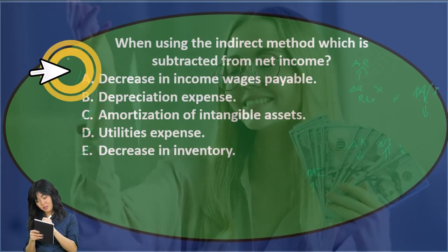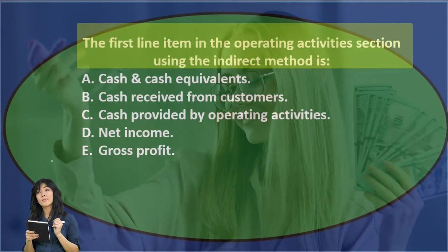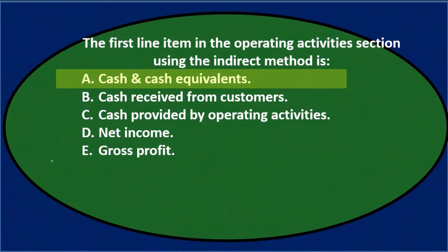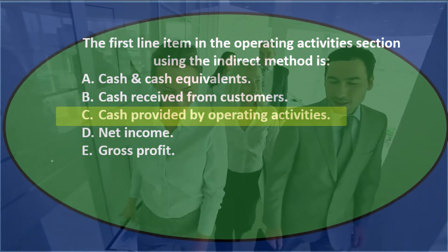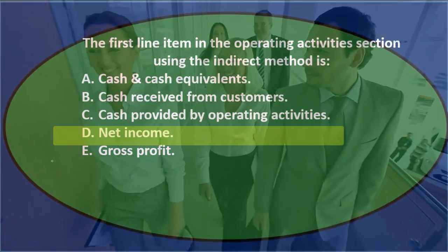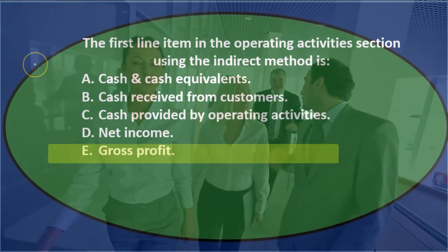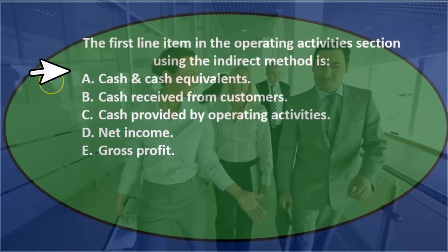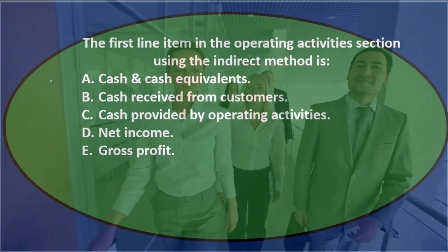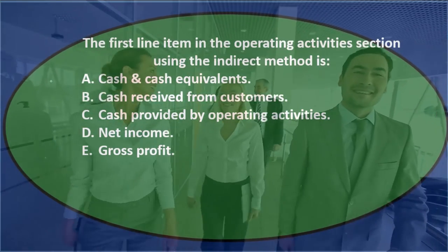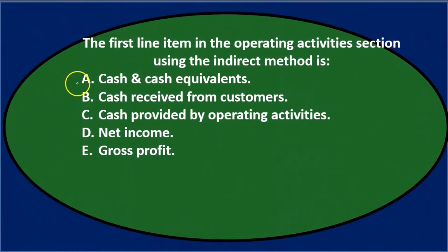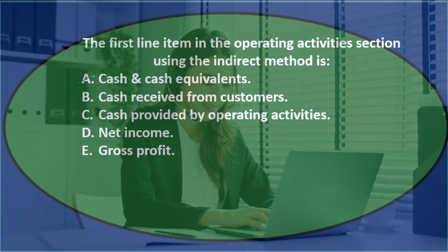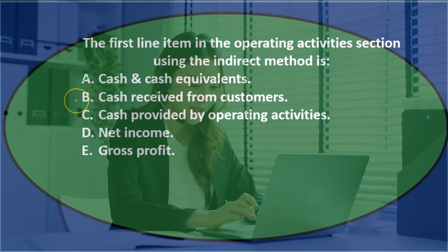Next question: the first line item in the operating activities section using the indirect method is — A) cash and cash equivalents, B) cash received from customers, C) cash provided by operating activities, D) net income, E) gross profit. A) cash and cash equivalents appears at the very bottom of the whole statement of cash flows — that's not what we start with, so it's not A.